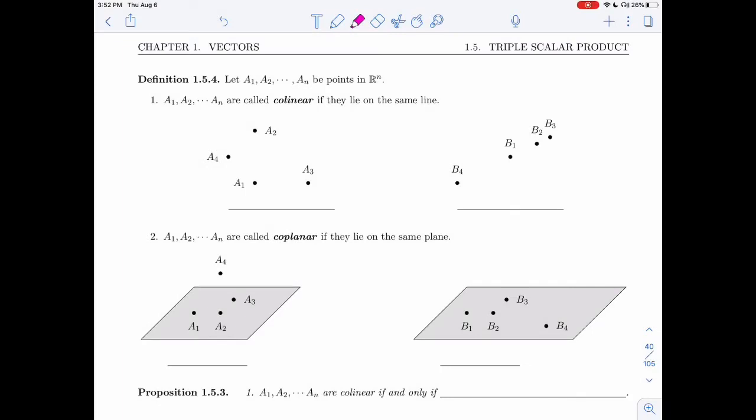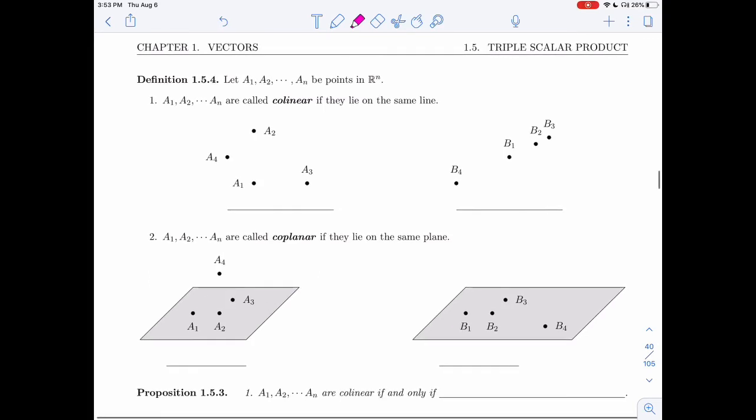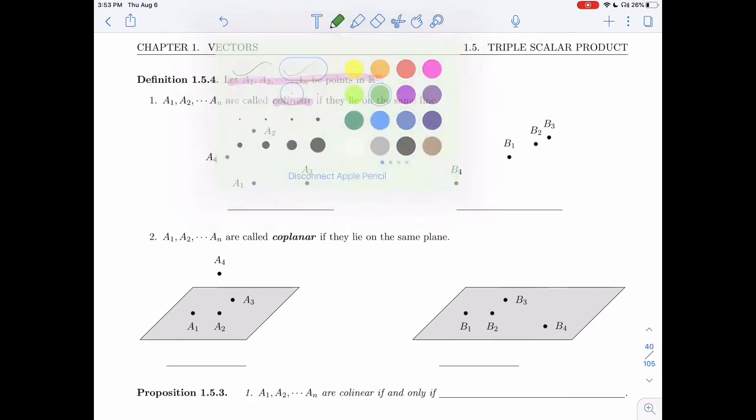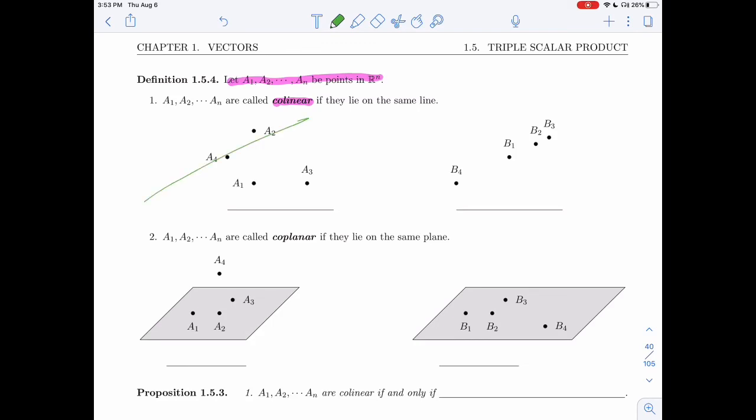So we just saw what it meant for vectors to be collinear and coplanar. One thing that was hard is we keep reminding you that vectors don't lie anywhere, and then we talked about them being on a plane. So I mentioned that that just meant it was parallel to the plane or that you could move it to lie on the plane. One notion that's easier is if you have points. So let's say I have A1, AN, points in Rn.